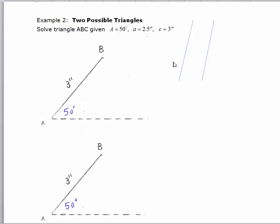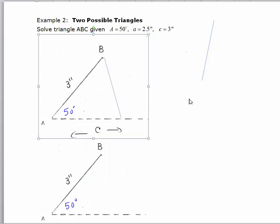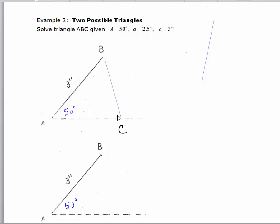I'm going to show you geometrically, and then algebraically, how you can figure out the same thing. Angle C is going to be down here somewhere, so I take my side of 2.5 and place it in here. We'll swing it and make one triangle. Here's one of my triangles, and we can see that angle C is going to be right here at this corner, in which case C would be an acute angle.